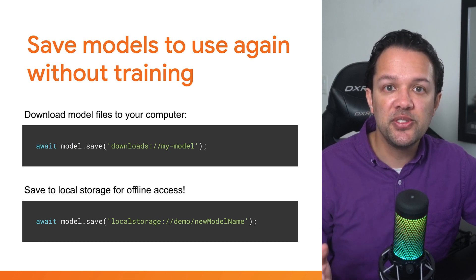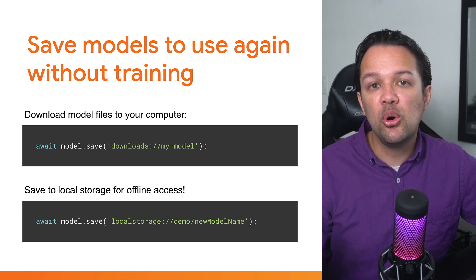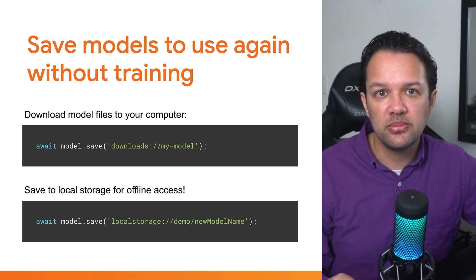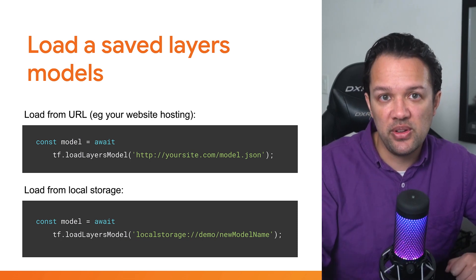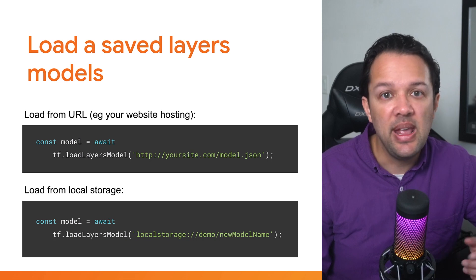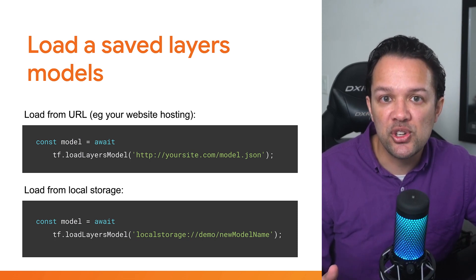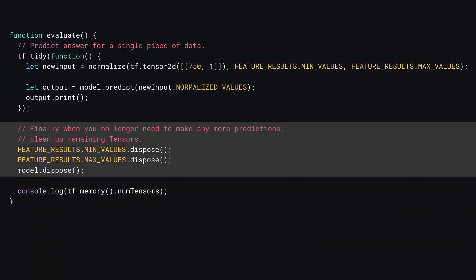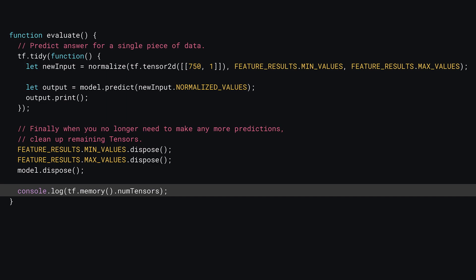If you want to save your model for future use, you can save the trained model to your computer as a download or to local storage in the browser using the model.save function. Note that if you try to download on glitch.com, ensure your live preview is in a new window, as iframed page previews are not allowed to create downloads by default. To use a saved model, you can use the code shown. Also manually note your input feature min and max values used for normalization, as you'll need these to pre-process new inputs later. When finished, you can dispose of remaining tensors and the model itself by calling dispose on all of them.